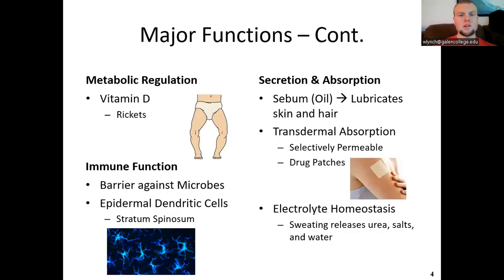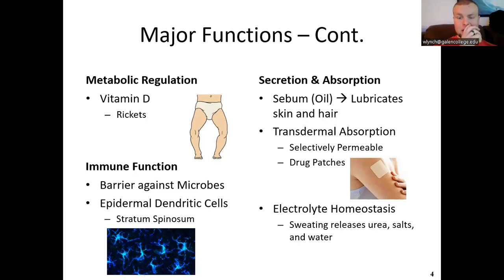For metabolic regulation, we synthesize vitamin D in the skin due to ultraviolet radiation. A deficiency in vitamin D, once common in children, causes rickets, also known as bowlegged syndrome. For secretion and absorption, we secrete sweat, oil, and earwax, and can absorb things through the skin — for example, transdermal patches, where medication is absorbed through the epidermal cells into the dermis.